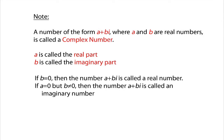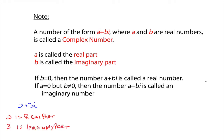If b equals 0, then the number a plus bi is called a real number, because you'd have 0 times i, which is 0, and you'd just have a real number. If a equals 0 but b is not equal to 0, then the number a plus bi is called an imaginary number. For example, if you have something like 2 plus 3i, then 2 is the real part and 3 is the imaginary part — it's the coefficient of i that's the imaginary part.